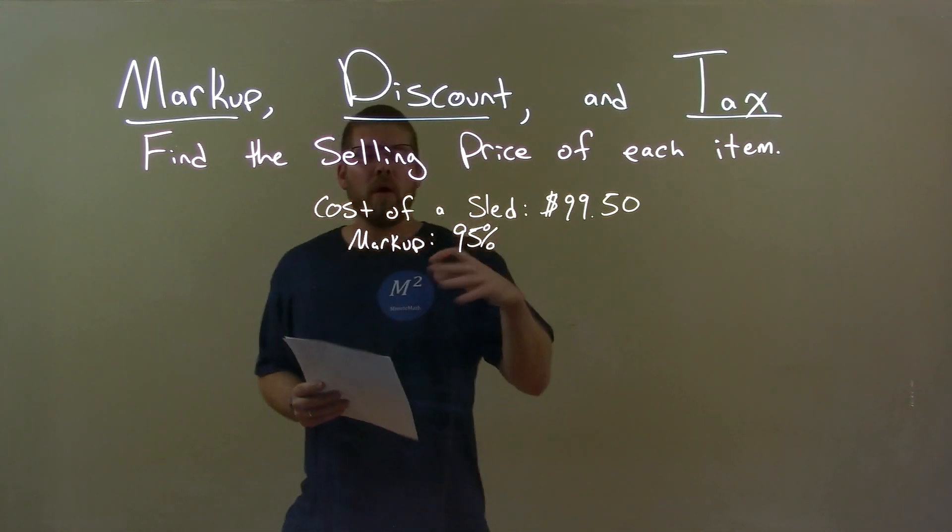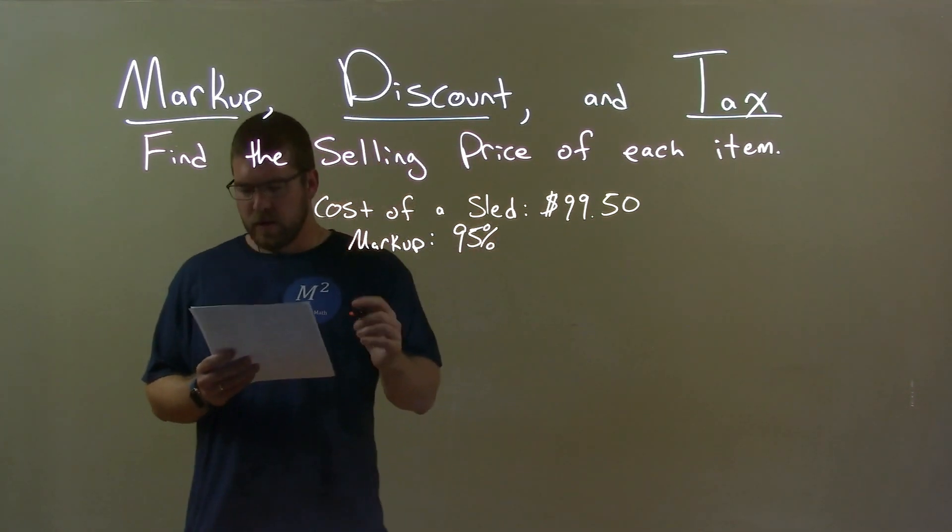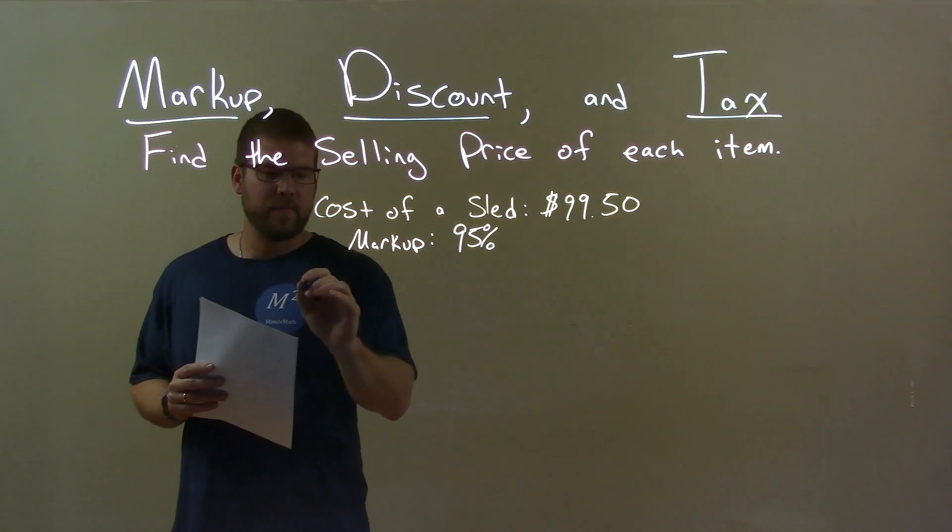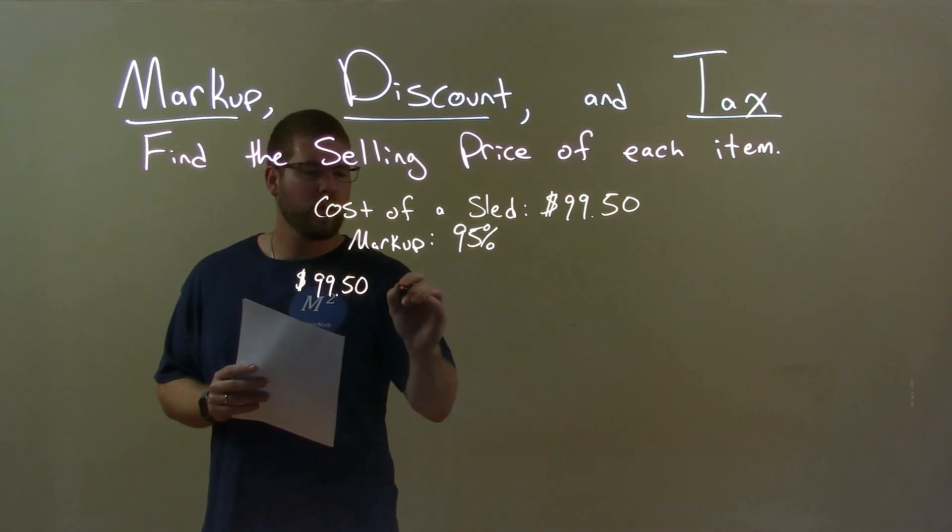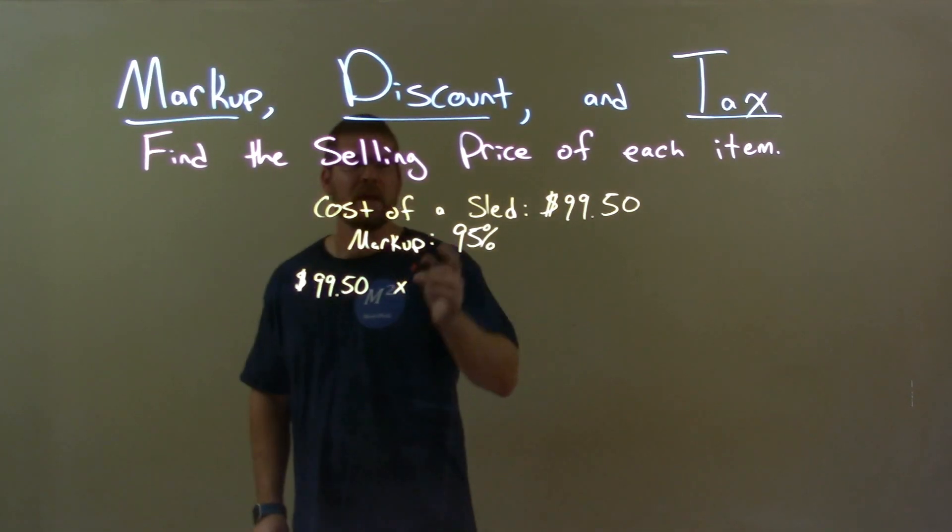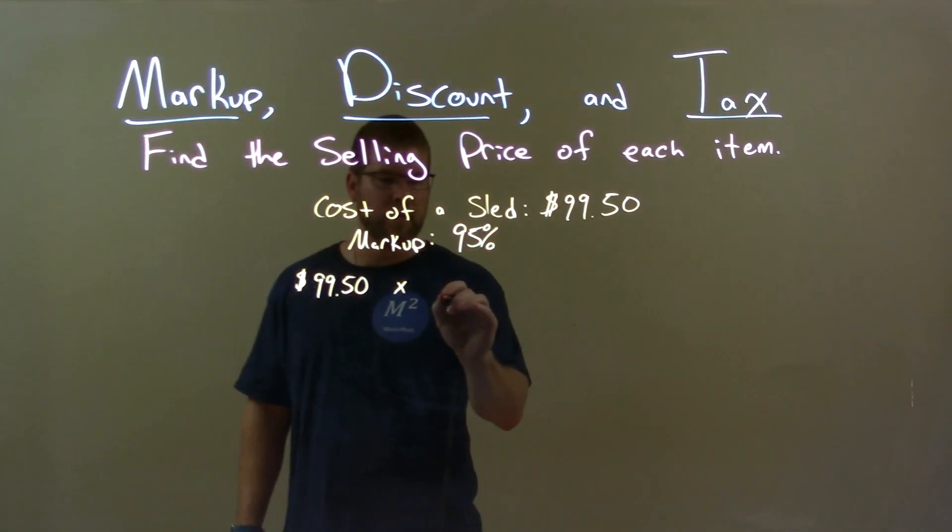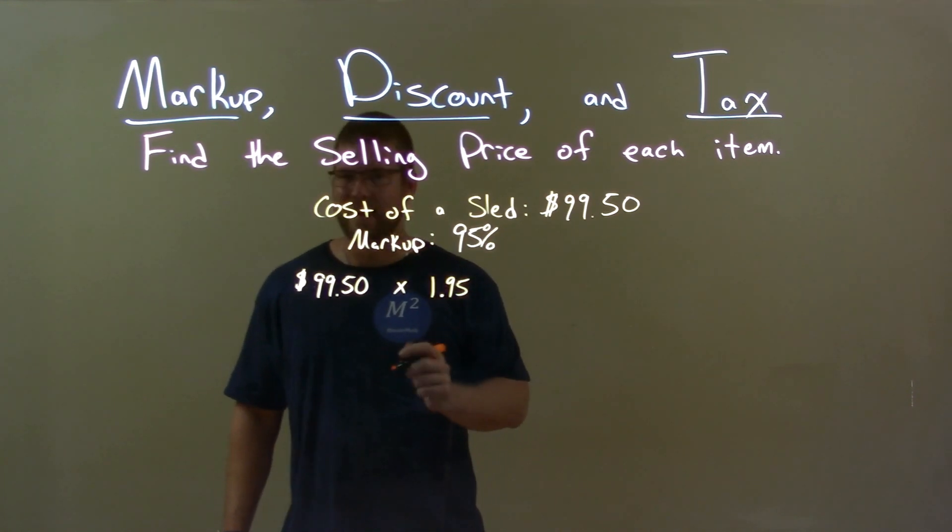Well, the way we calculate markup is we take the cost of the sled, right? We take the $99.50, and what we're going to do is multiply that by not just 95% as a decimal (that's 0.95), but we have to multiply it by 1.95.